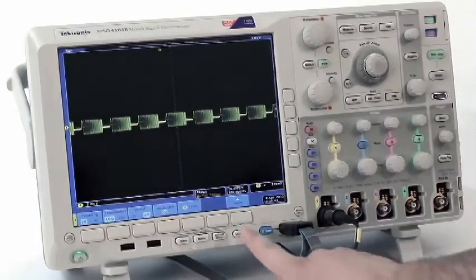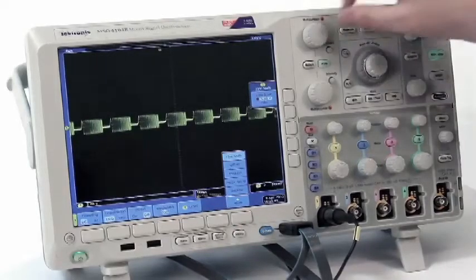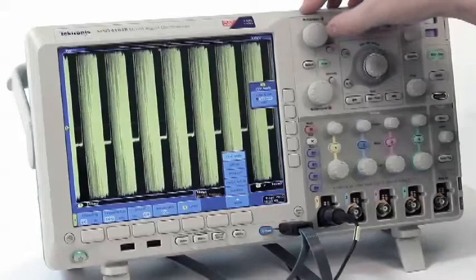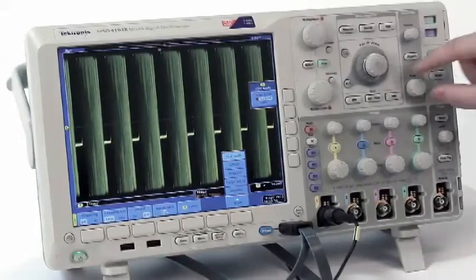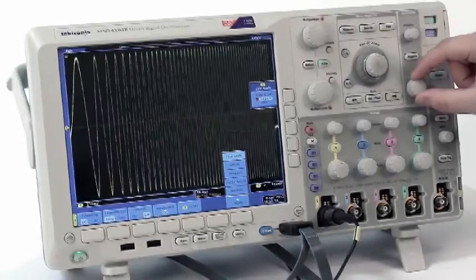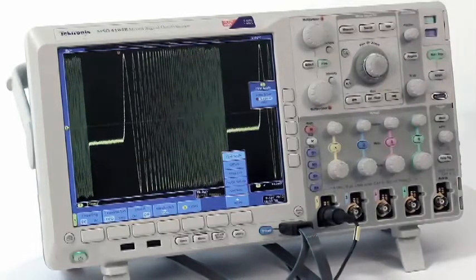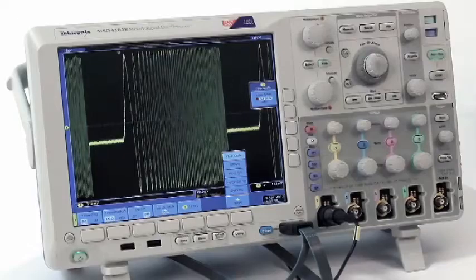Tektronix does not offer a quick way to switch into fine vertical mode. You must navigate a few menus and then use a tandem of knobs to center the waveform on the display. Additionally, Tektronix does not have a fine mode on the time base. It also lacks pushable knobs and only offers limited built-in help functionality.